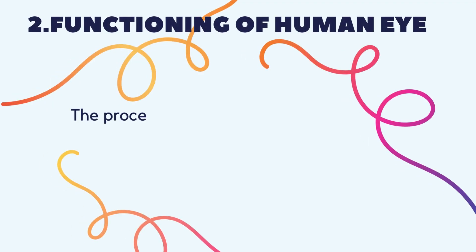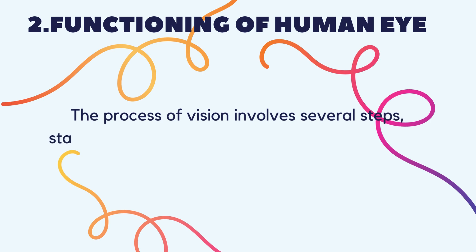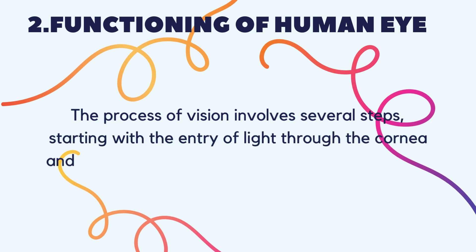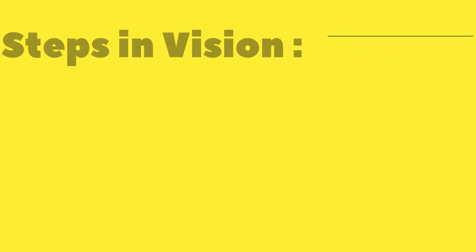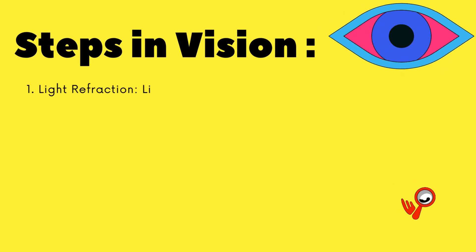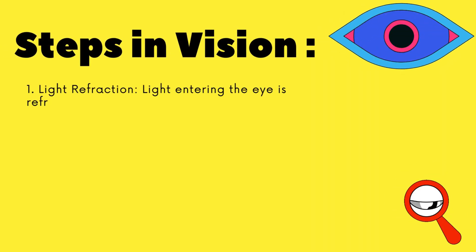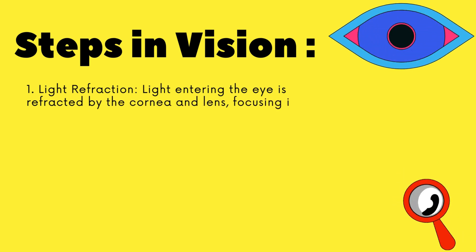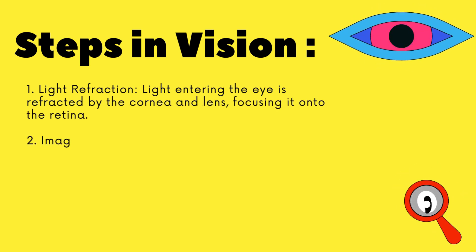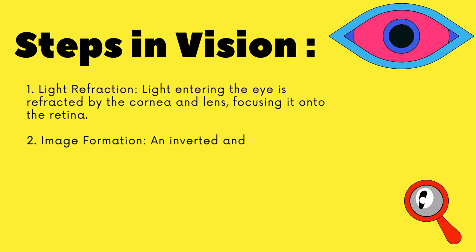Optic nerve transmits visual information from the retina to the brain. The process of vision involves several steps, starting with the entry of light through the cornea and ending with the interpretation of visual signals by the brain. Step 1 — Light refraction: light entering the eye is refracted by the cornea and lens, focusing it onto the retina.